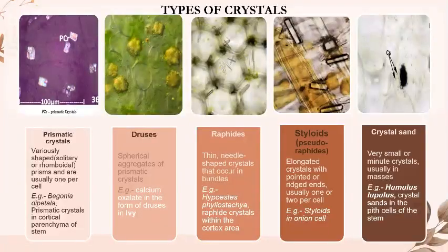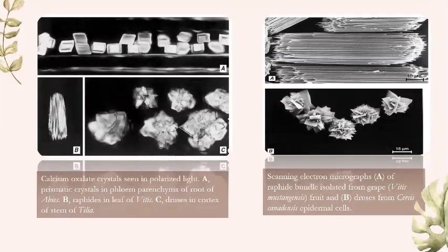There are five types of calcium oxalate crystals: prismatic crystals, raphides, druzes, styloids, and crystal sand. Here are some more images of different types of calcium oxalate crystals.